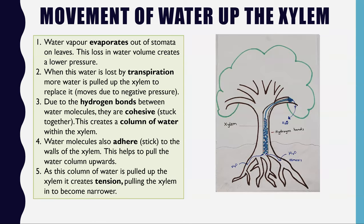The last part is the tension component of the cohesion tension theory. The tension is created by the pull from the top. As water moves up to replace the evaporated water, the pull on the water column — which is also attached to the walls of the xylem — draws the xylem walls inward, resulting in a narrower xylem tube and therefore increasing the impact of capillarity even further.